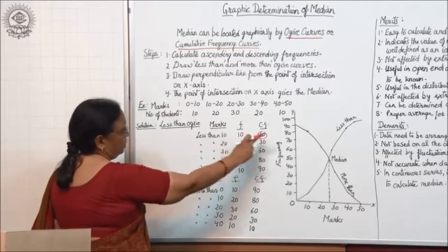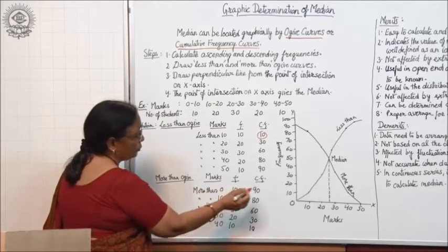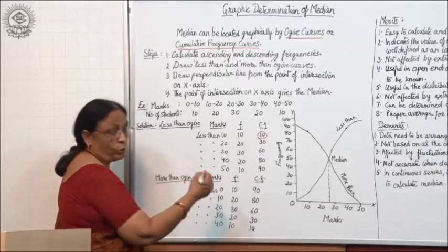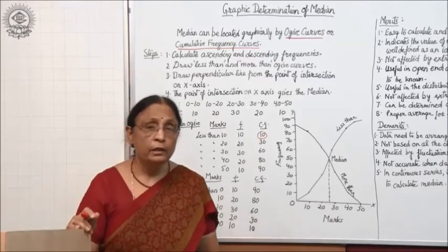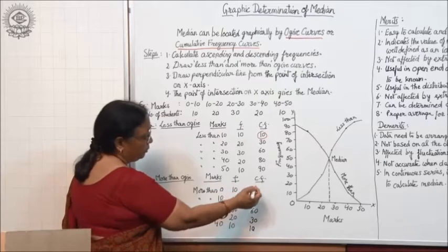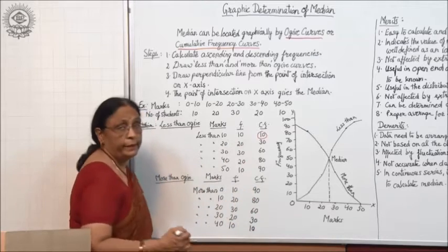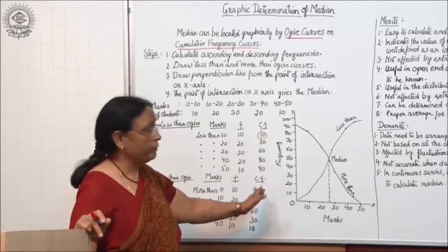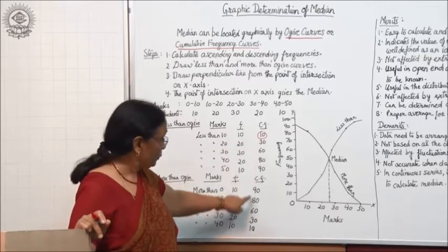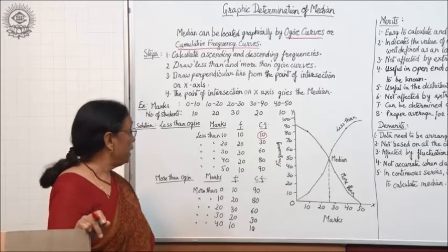For the more-than ogive, arrange cumulative frequencies in descending order. More than 0 is 90, because the total frequency is 90 and all students score more than 0. More than 10 is 90 minus 10, which is 80; and so on in descending order. Arrange frequencies this way for both less-than and more-than ogives.